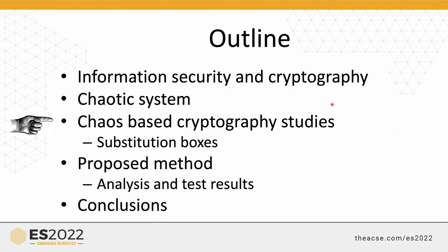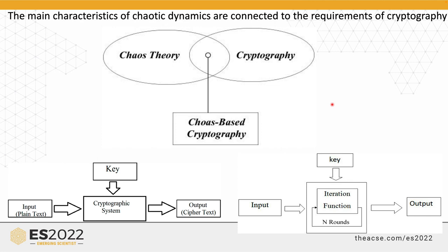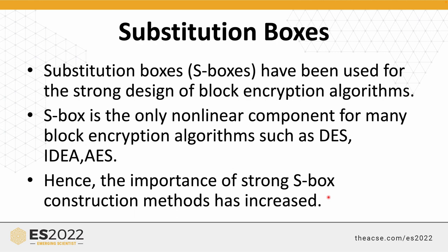In the last two decades, chaos-based cryptography studies have been an important research topic. One of these is chaos-based substitution box, or S-box, design. There is a robust relationship between chaos and cryptography. The main characteristics of chaotic dynamics are connected to the requirements of cryptography — dependency on initial conditions and control parameters connects to confusion and diffusion of information. Consequently, many chaos-based encryption algorithms have been proposed using this relationship. These design studies fall under two main categories: chaotic key-generation and chaotic permutations. The focus of this work is transforming chaotic permutations into S-box structures as a cryptographic primitive.